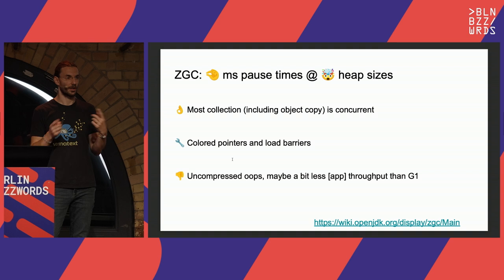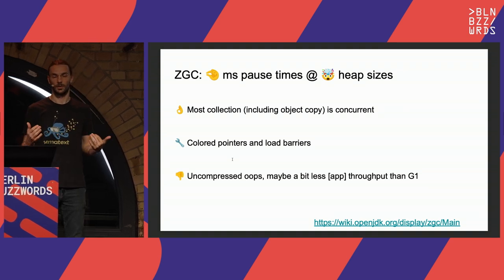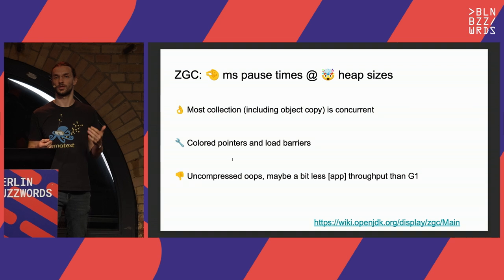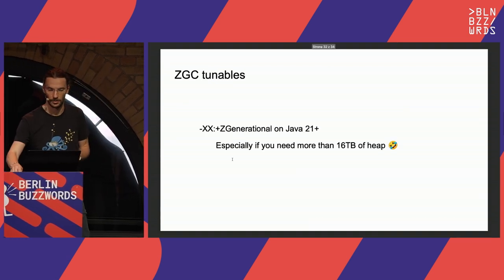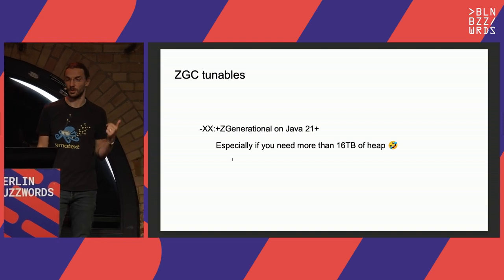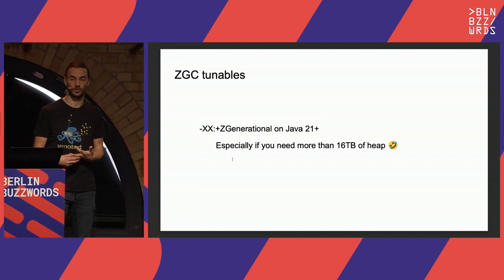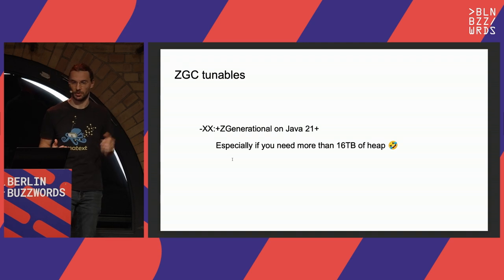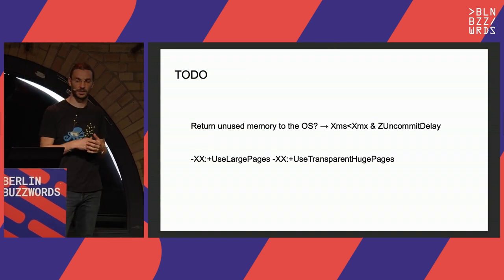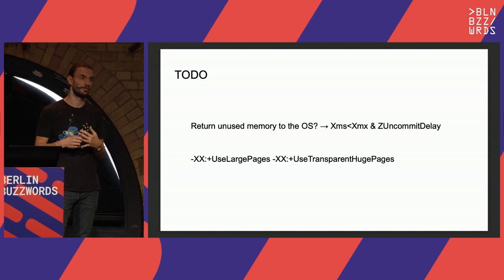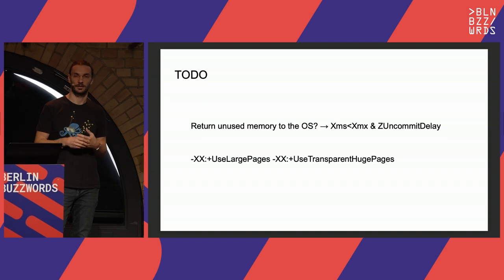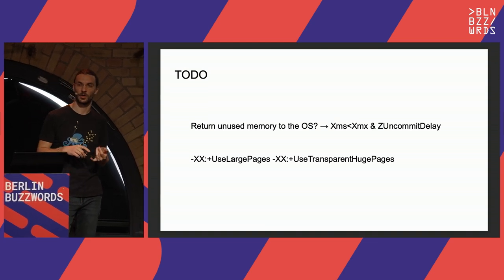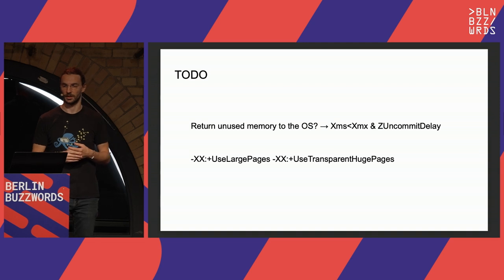ZGC has generally very small pause times because even copying objects happens concurrently with the application, so it scales really well with heap size. The downside is no compressed pointers and in theory throughput is not as good as G1, though in practice that difference wasn't observed. With Java 21, ZGC can also be generational, which can help improve throughput. ZGC is adaptive with little to tune, can return memory to the OS, and plays nicely with huge pages and transparent huge pages.